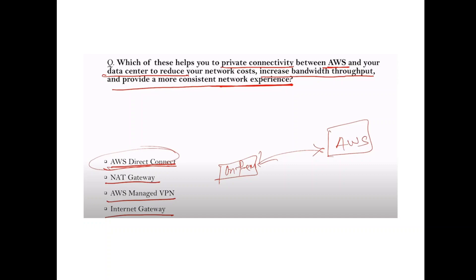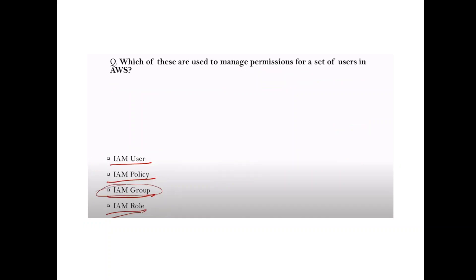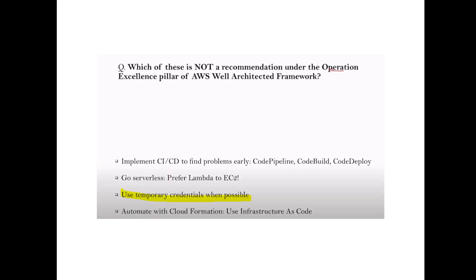Question: Which of these are used to manage permissions for a set of users? Generally IAM Groups are used for managing permissions for users with rules and roles. Question: Which is not a recommendation under operational excellence? Answer: Use temporary credentials when possible.